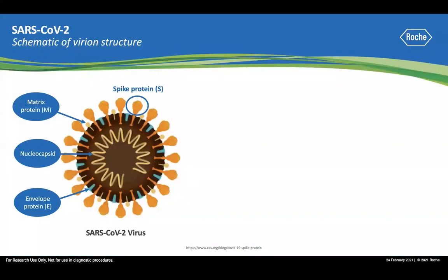SARS-CoV-2 is a beta coronavirus that caused the COVID-19 pandemic. It is an RNA virus. Inside the viral particle, the coil-like structure is called the nucleocapsid, which is the viral genome RNA coated with nucleocapsid proteins. The nucleocapsid is enclosed inside a phospholipid envelope, and embedded in the lipid envelope are viral structural proteins. The most prominent one is called the spike protein, which plays a critical role in viral particle entry into the host cell.